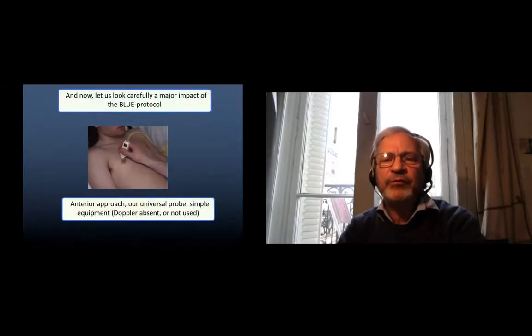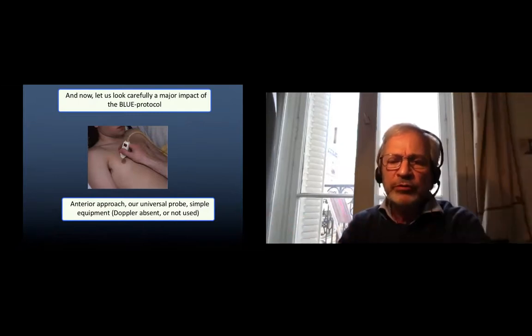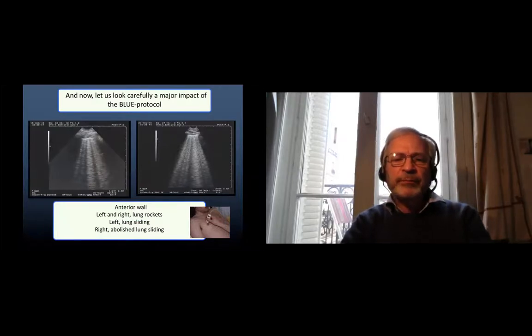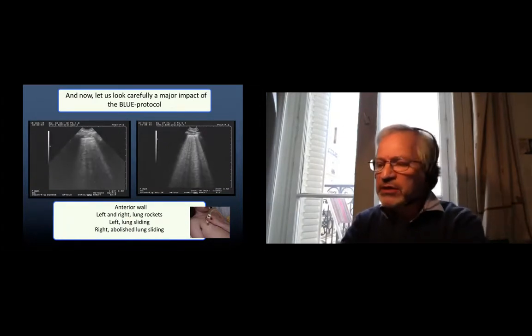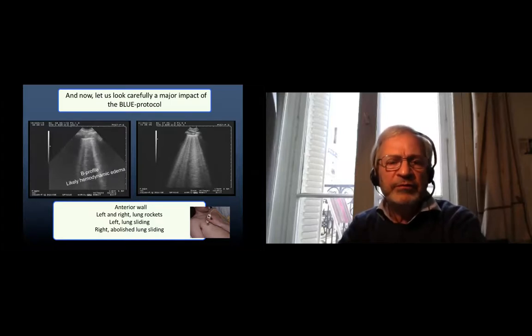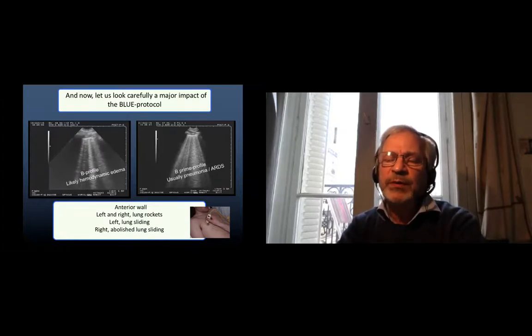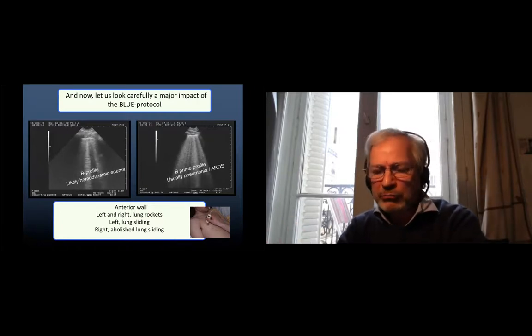Now let us see carefully. We are at the anterior wall left and right. We see lung rockets. To the left there is a lung sliding. To the right there is no lung sliding, it is abolished. Very basically we can say to the left this is the B profile, of likely a hemodynamic edema, and to the right this is what we call the B-prime profile, which is almost always pneumonia and/or ARDS, which is the same to simplify.